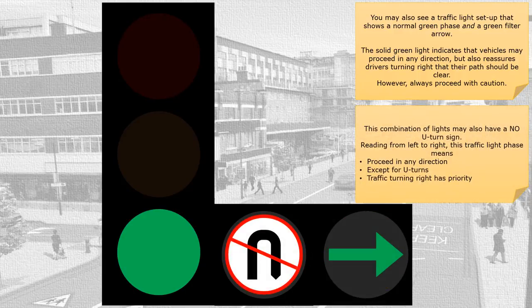This combination of lights may also have a no U-turn sign. Reading from left to right, this traffic light phase means proceed in any direction except for U-turns, but traffic turning right has priority.